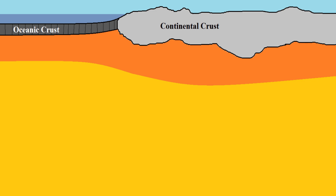Below the continental and oceanic crust begins the mantle. However, there is a term for a layer that makes up the entire crust as well as the upper parts of the mantle. This is called the lithosphere and makes up the entire crust and upper mantle. The lithosphere is a relatively cool but solid part of the earth and makes up the earth's outer shell.